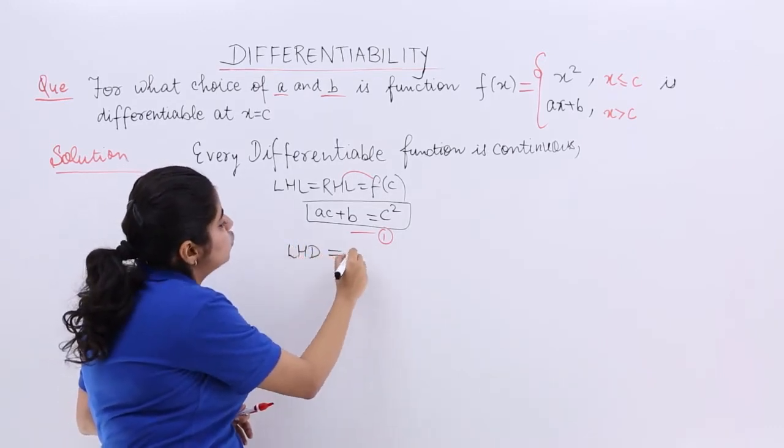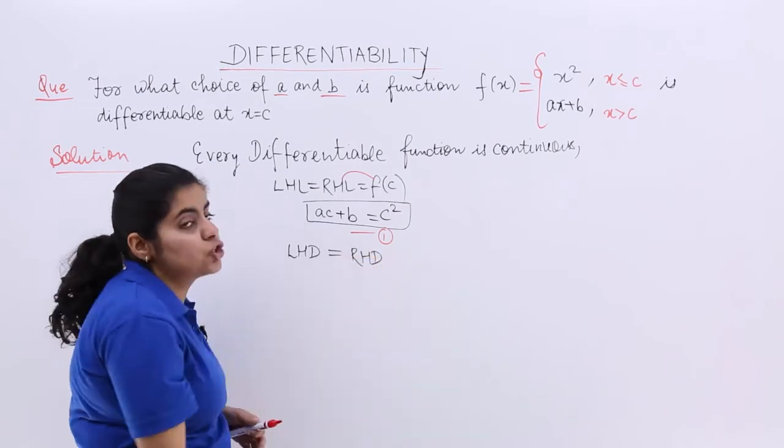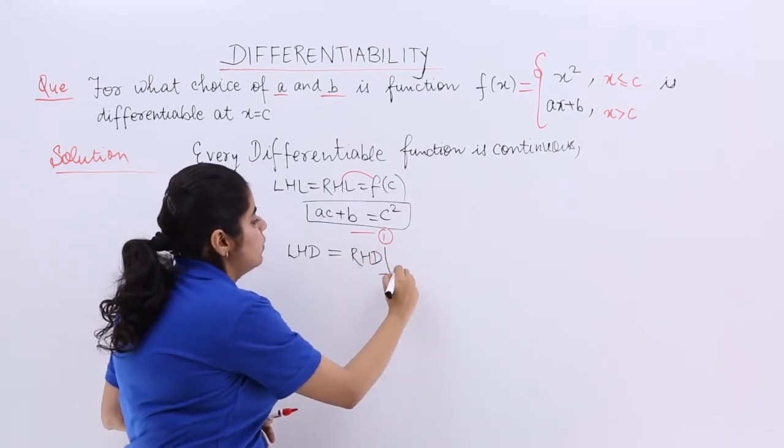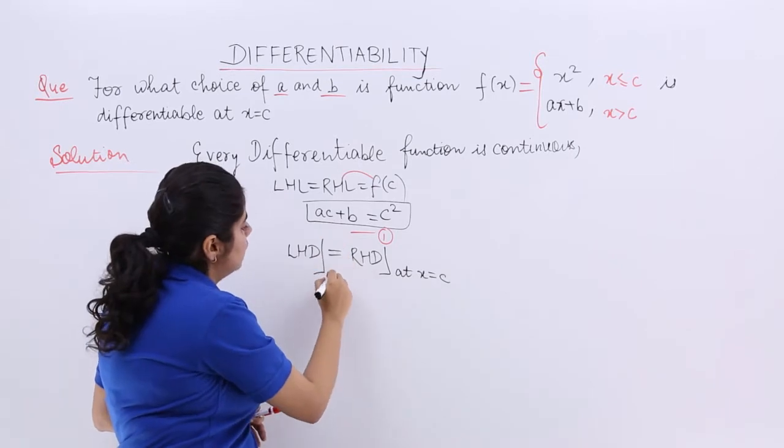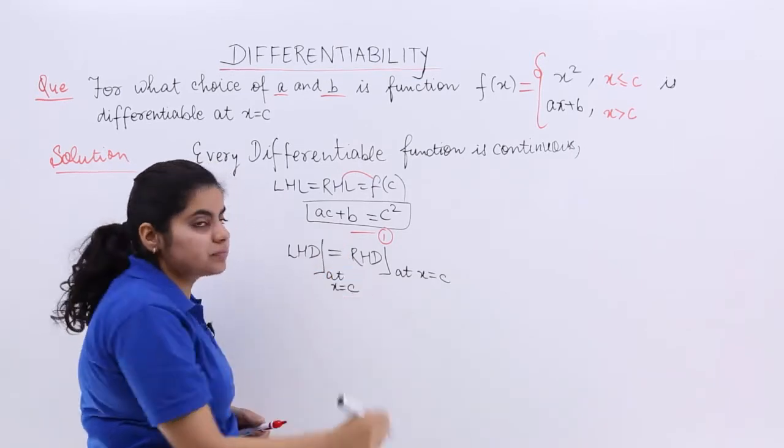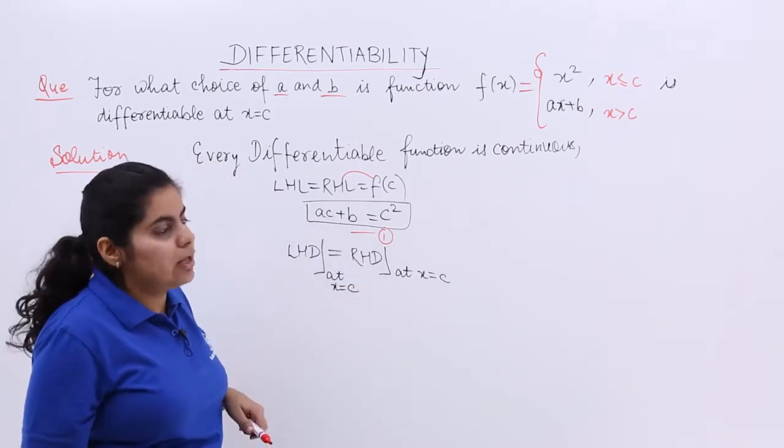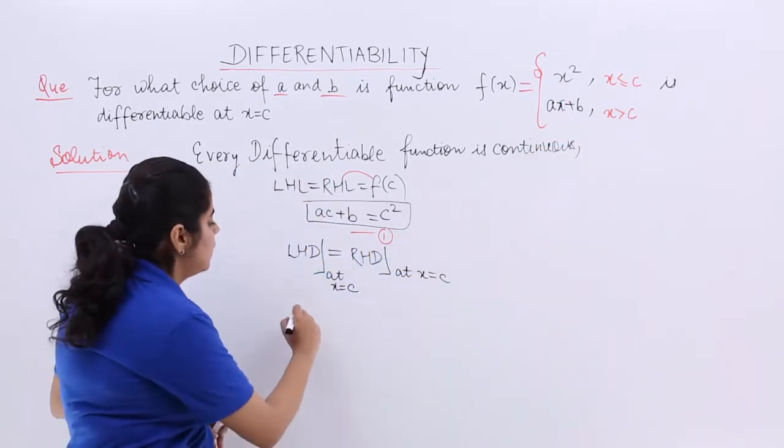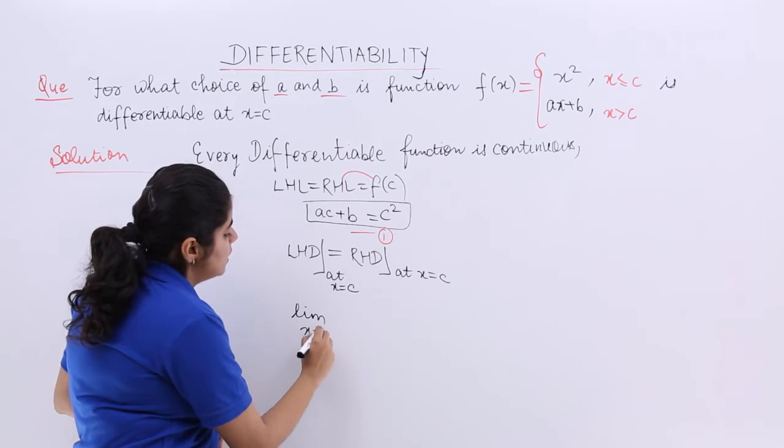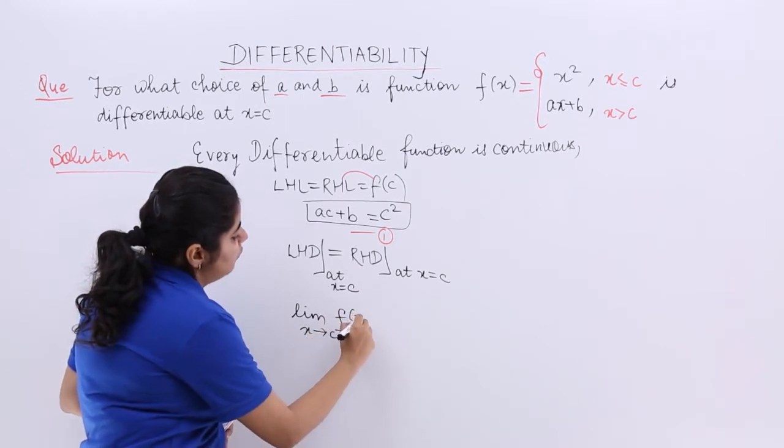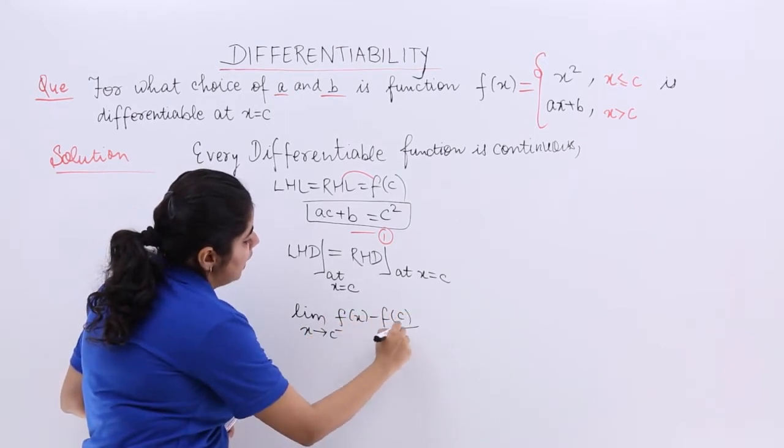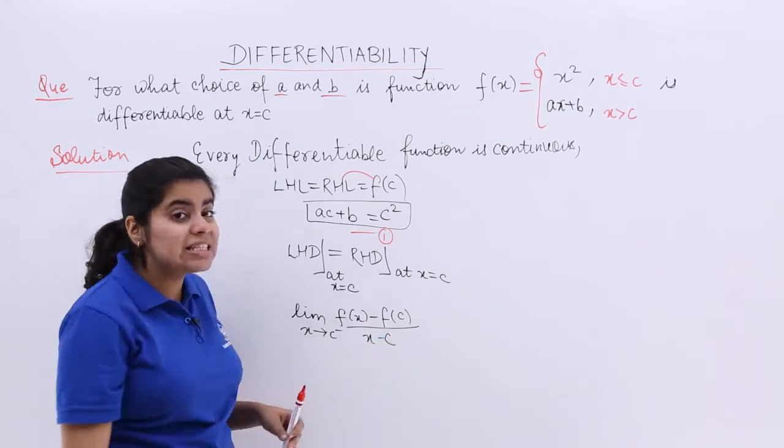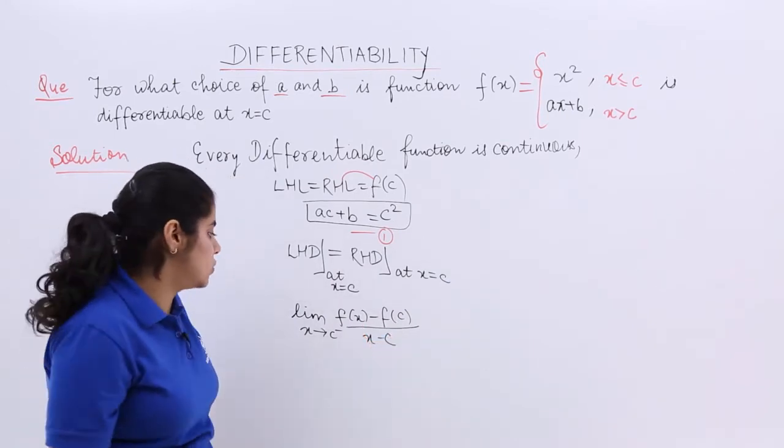Let us find out the other with the help of differentiability. The left hand derivative should be equal to the right hand derivative, in short that I write at x is equal to c. Again here at x is equal to c. Right? Now, what is the left hand derivative? Left hand derivative will be using this expression. I write here limit x tends to c negative f of x minus f of c upon x minus c. This time it is not A, this time it is C. Mind it.